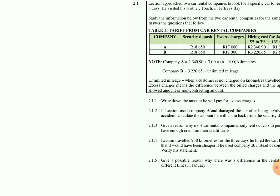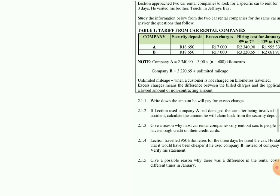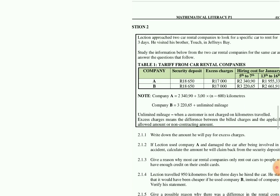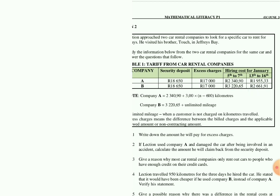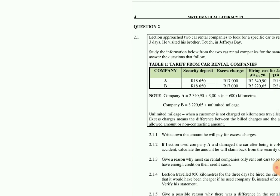Let's start with some definitions. Unlimited mileage means the customer is not charged on kilometers traveled. Excess charges means the difference between the billed charges and the applicable allowed amount, or non-contracting amount.